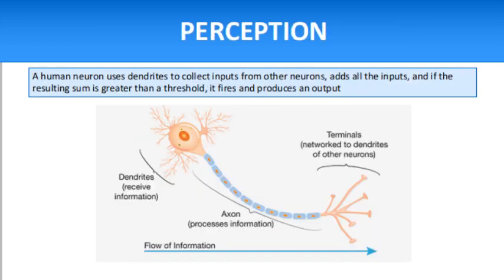Now if we talk in detail, there is a concept of the perceptron. The building block of ANN is called the perceptron, which is an algorithm inspired by the biological neuron. The average human brain has approximately 100 billion neurons. A human neuron uses dendrites to collect inputs from other neurons, adds all the inputs, and if the resulting sum is greater than a threshold, it fires and produces an output. The fired output is then sent to other connected neurons.